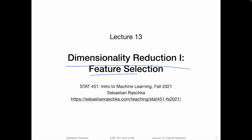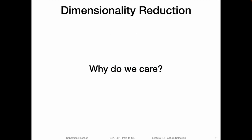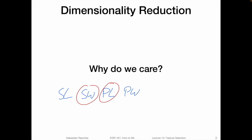There are two types of dimensionality reduction: one is feature selection and one is feature extraction, and feature extraction will be the topic of the next lecture. Before we dive into these types of details, let's briefly talk about what dimensionality reduction means and why we care. Dimensionality reduction is essentially about reducing the size of the feature set. For example, if you think about the familiar iris dataset, we have four features: sepal length, sepal width, petal length, and petal width. In feature selection, we usually select a subset of these features — for example, the sepal width and the petal length.